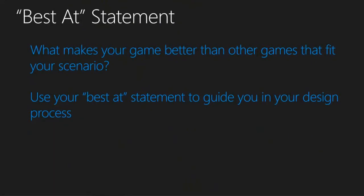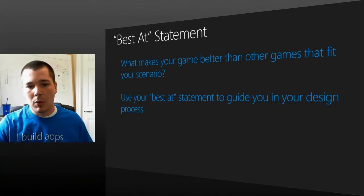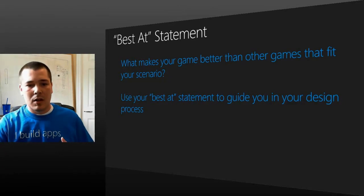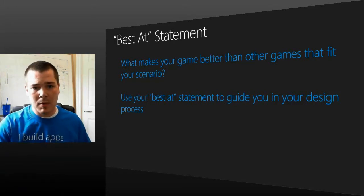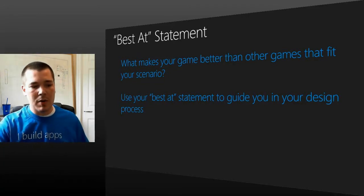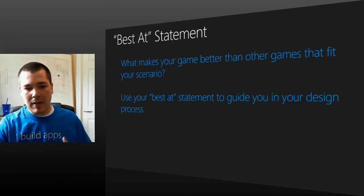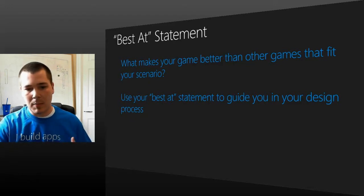Our best at statement. This can be summed up as: what makes your game stand out from the rest? What can you do better than any other game? What makes your game unique? A best at statement for a game like Cannonball would be: 'Cannonball is best at providing users with a simple and exciting game that allows them to create music by guiding a ball through platforms and collecting coins.' It's really important that you do this before you start designing your game — it's going to drive your development as you move forward.